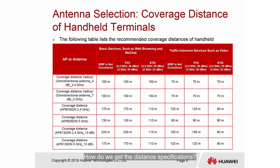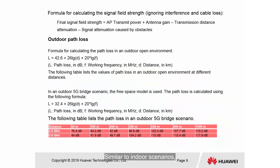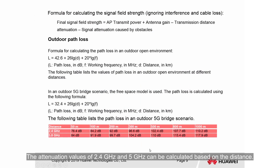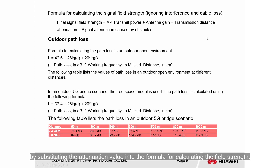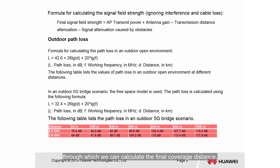How do we obtain these distance specifications? Similar to indoor scenarios, there is a path loss formula for outdoor scenarios. The attenuation values of 2.4 GHz and 5 GHz can be calculated based on distance, and the final field strength is obtained by substituting the attenuation value into the field strength formula. Generally, the field strength value must be greater than or equal to -70 dB, from which we can calculate the final coverage distance.